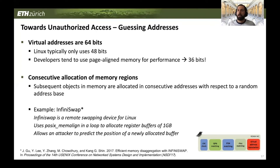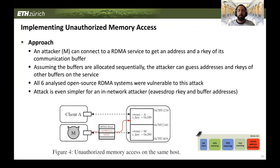Regarding bypassing virtual address translation, we exploited consecutive allocation of memory regions. Objects in memory are allocated at consecutive addresses relative to a random base within the same process. Our approach is: an attacker M connects to an RDMA service to obtain the address and R-key of its own communication buffer. Then, by assuming buffers are allocated sequentially, it can guess the addresses and R-keys of other buffers on the service. All systems we analyzed were vulnerable to this attack. The attack is even simpler for an in-network attacker, who can simply eavesdrop on R-keys and buffer addresses from passing packets.